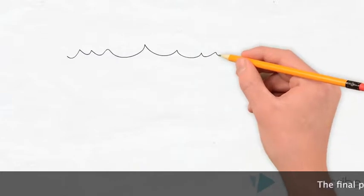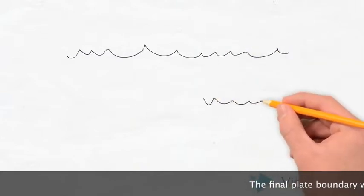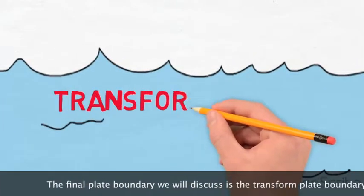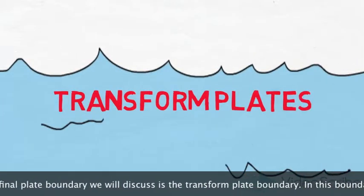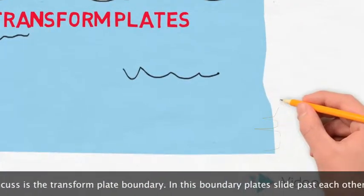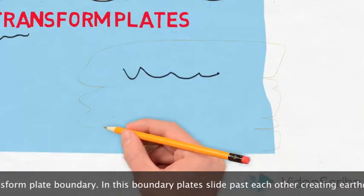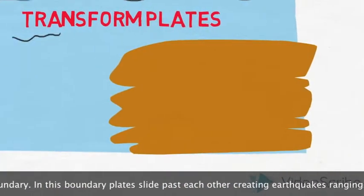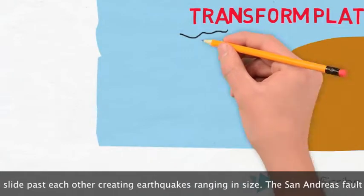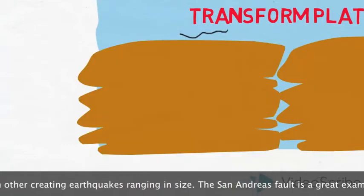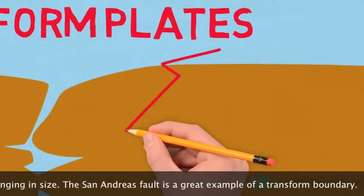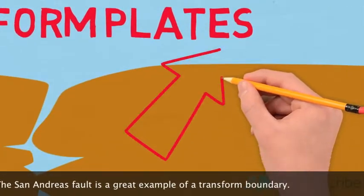The final plate boundary we will discuss is the transform plate boundary. In this boundary, plates slide past each other, creating earthquakes ranging in size. The San Andreas Fault is a great example of a transform boundary.